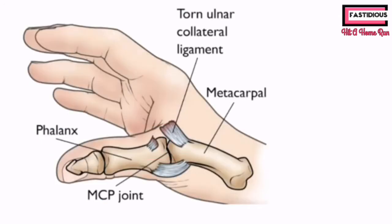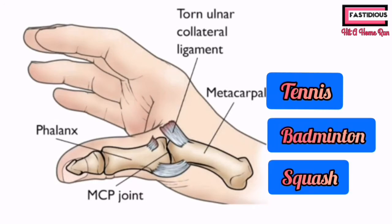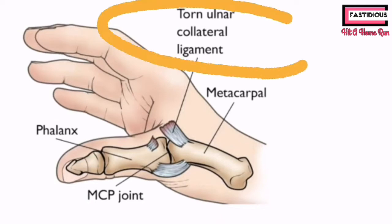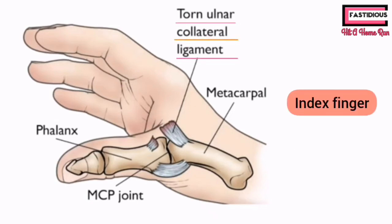The third location is the thumb. Thumb sprains occur in racket sports like tennis, badminton, and squash, due to overextension of the thumb. Thumb sprains mostly involve the ulnar collateral ligament. When the ulnar collateral ligament gets sprained, it becomes difficult for a person to grasp objects between the index finger and thumb.